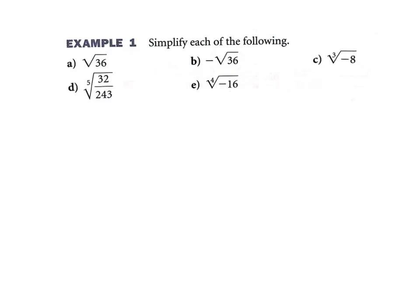Simplify each of the following — these are the ones you should probably know. The square root of 36 is just 6. That's all we're going to put; we always want the principal square root. Part b has a negative in the front, which means we want the opposite of the square root of 36, which would be negative 6.